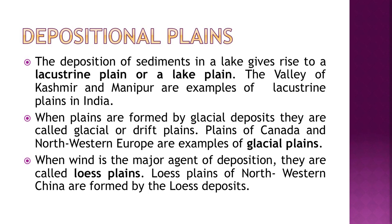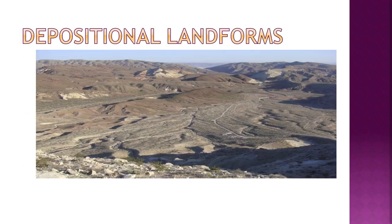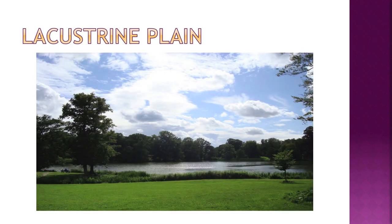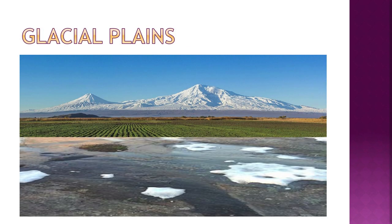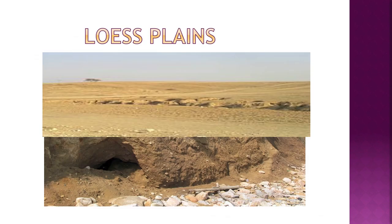Depositional plains are of various kinds. Deposition of sediments in a lake gives rise to a lacustrine or lake plain — the valleys of Kashmir and Manipur are examples in India. Plains formed by glacial deposits are called glacial or drift plains — those of Canada and northwestern Europe are examples. When wind is the major agent of deposition, they are called loess plains — the loess plains of northwestern China are formed this way.